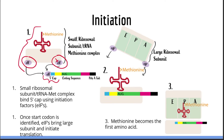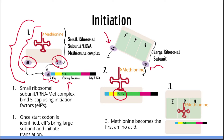In summary, initiation begins with the ribosomal tRNA complex looking for the 5' cap of a mature mRNA. Once found, it binds the mRNA and starts looking for a start codon, which is AUG. Once a start codon has been found, elongation factors bring in the large ribosomal subunit to form the initiation complex, and elongation will begin.